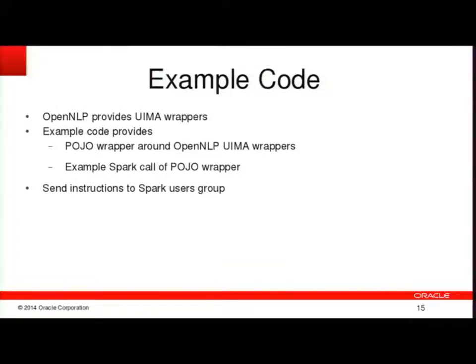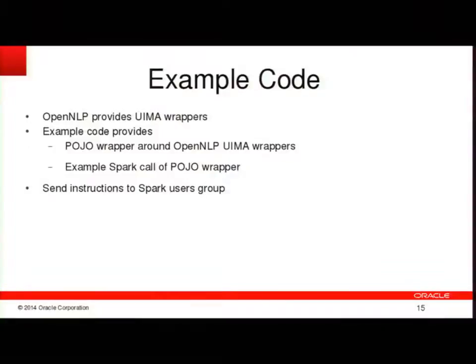In my abstract, I promised to provide a complete working example. I've gotten most of the way there, but it's not available yet. I will post instructions to the Spark users list when that's available. What I've cobbled together so far is an example that shows how to invoke OpenNLP. It's a bit of a silly and contrived example because OpenNLP is perfectly fine to call as a Java library, but they do provide UIMA wrappers, so basically I'm providing a POJO wrapper around their POJO library. It is nice to have all the mechanics in one place to demonstrate the required API, along with a simple Spark example with an RDD of type string that invokes the POJO wrapper.